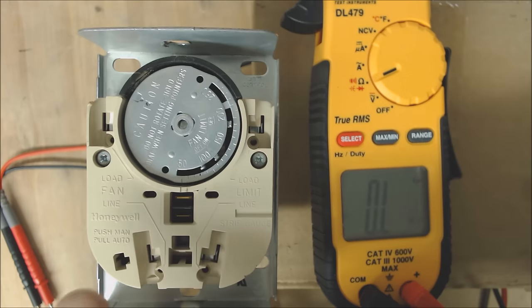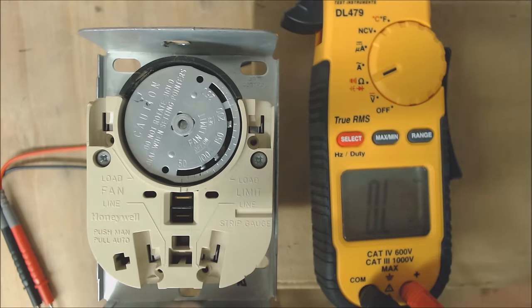If you have a tab over here like a button, that is just to override and turn your fan on manually. The power wire comes in here and gets jumped across to here.